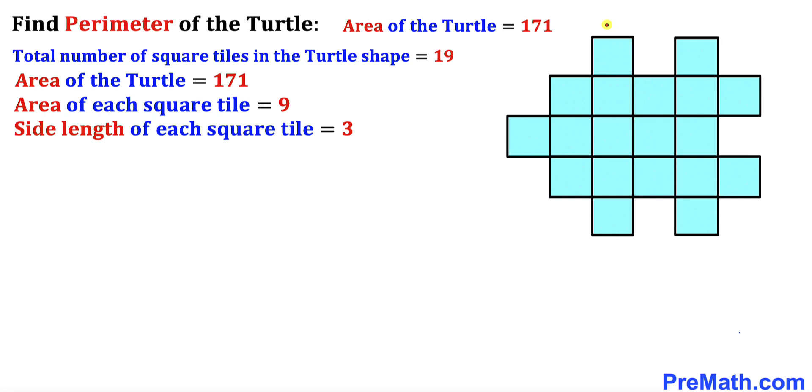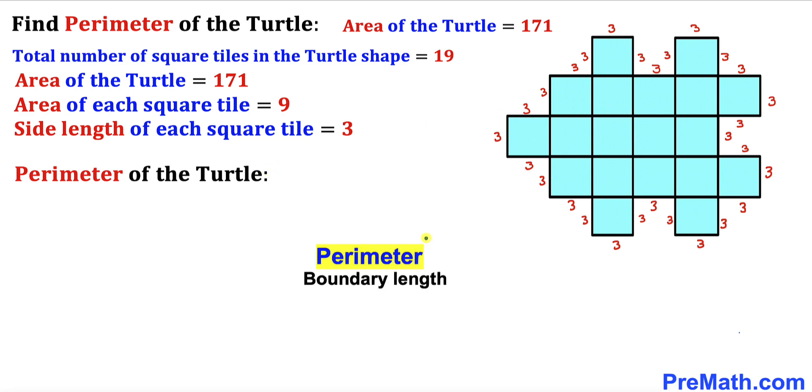All these side lengths are going to be 3 units across the board. Here's our final step. Let's calculate the perimeter of this turtle shape. Perimeter is nothing more than just the boundary length. Let's start counting these side lengths around this turtle shape. Let's start from this one.